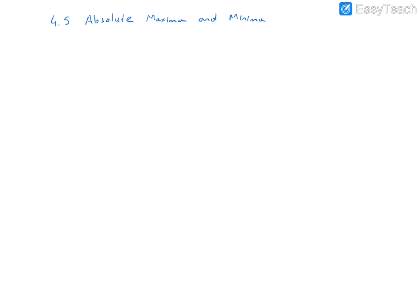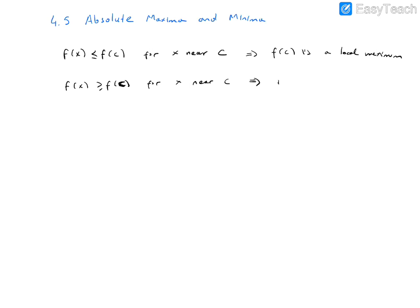In this section we develop the procedure needed to find the absolute maximum and absolute minimum value of a function. First, let's recall: f of c is a local maximum if f of x is less than or equal to f of c for all x near c. And f of c is a local minimum if f of x is greater than f of c for all x near c.